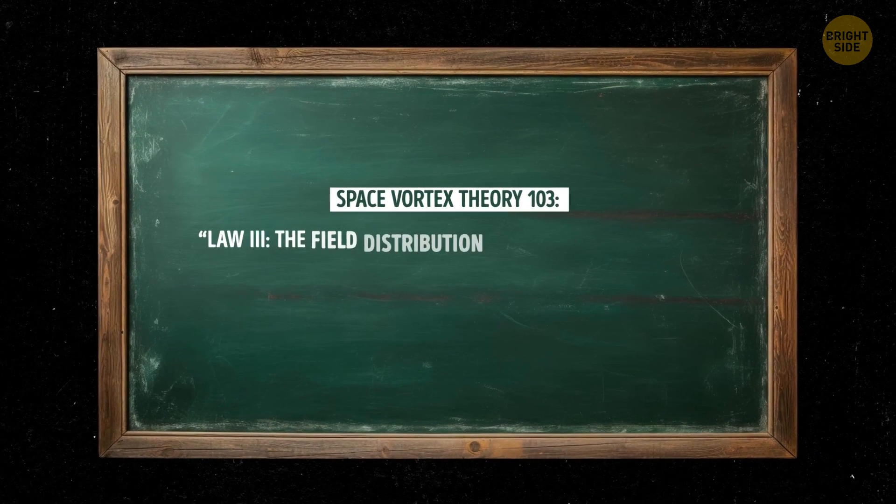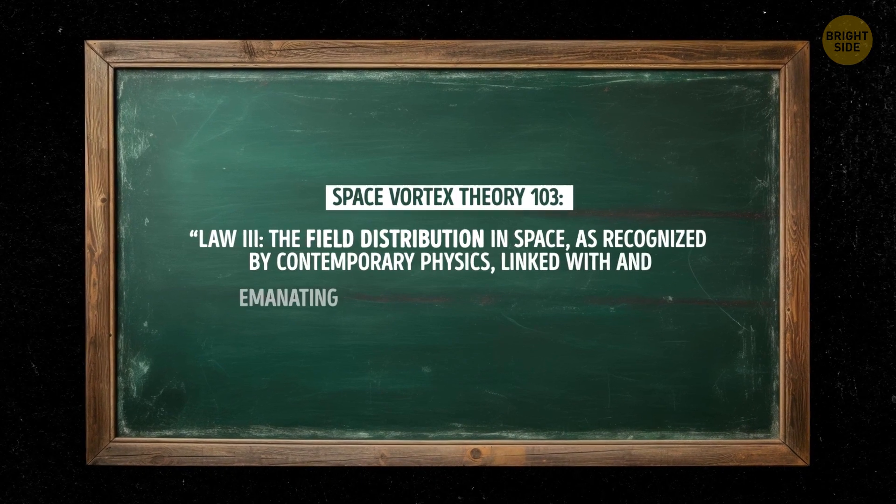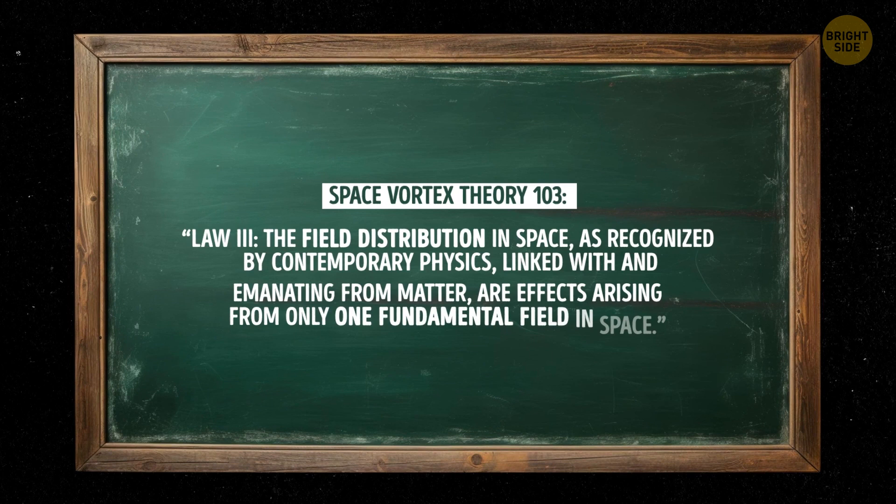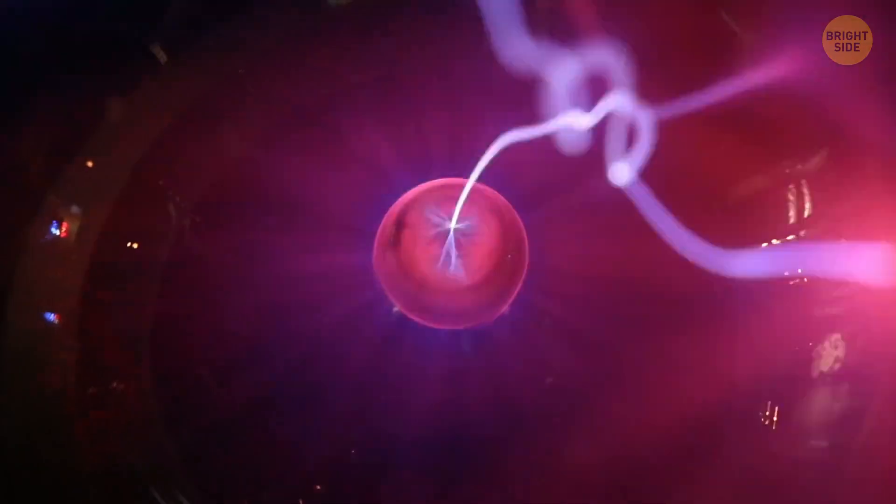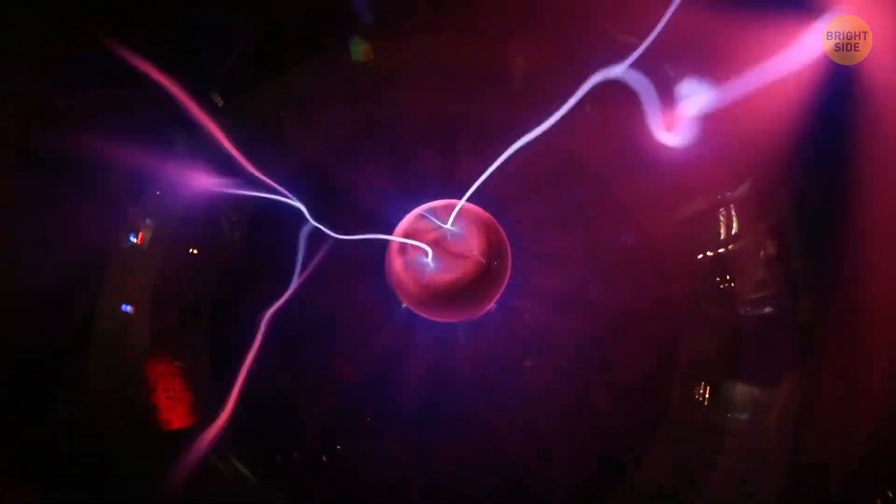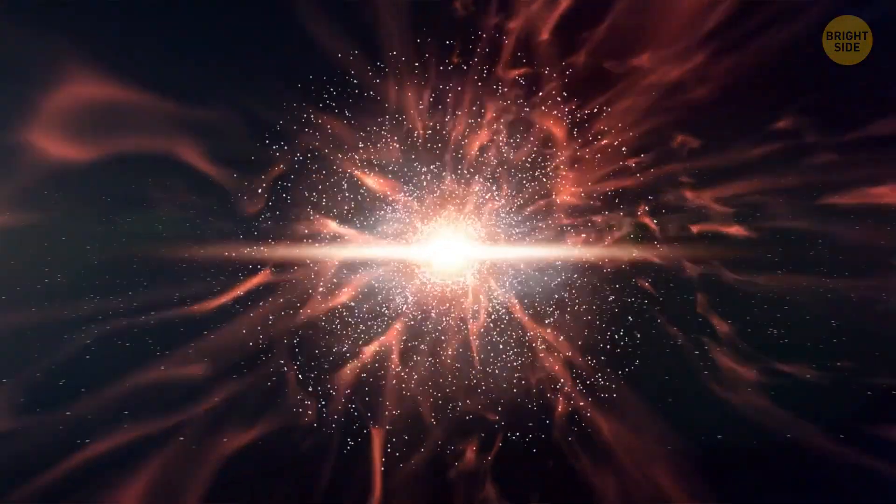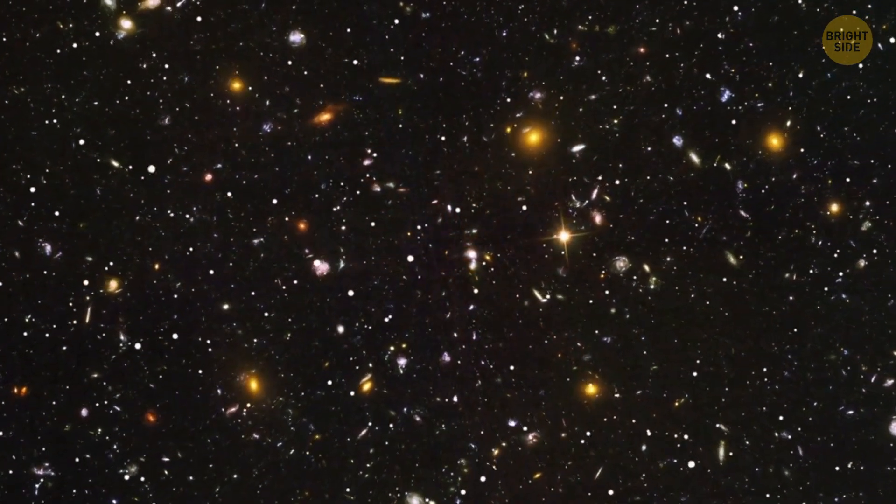Law 3: The field distribution in space, as recognized by contemporary physics, linked with and emanating from matter, are effects arising from only one fundamental field in space. This law states that the fields recognized by contemporary physics, such as the electromagnetic and gravitational fields, are effects arising from a single fundamental field in space. It suggests that this fundamental field is responsible for creating everything that we observe in the universe. So, let's try to put it simply.